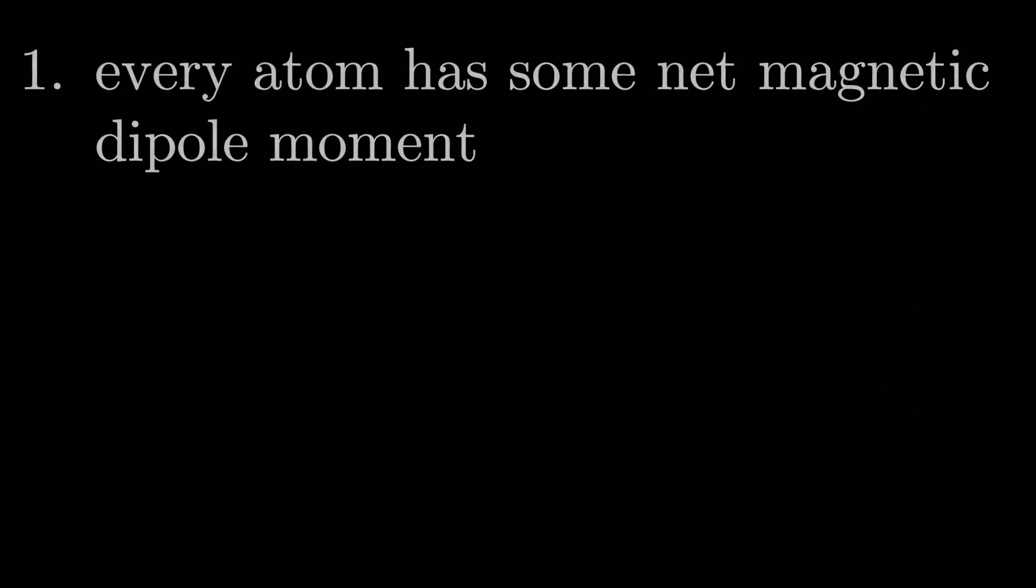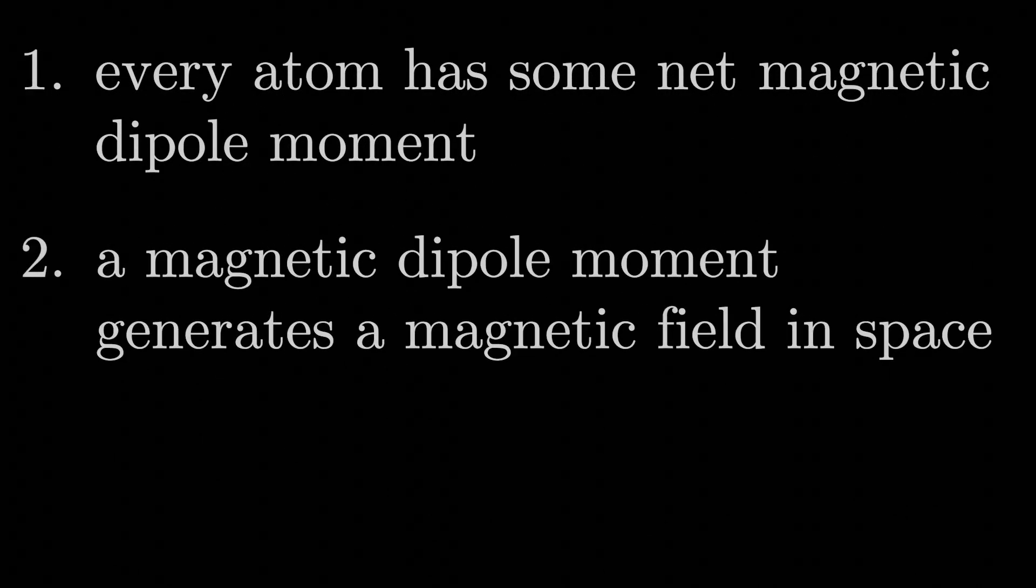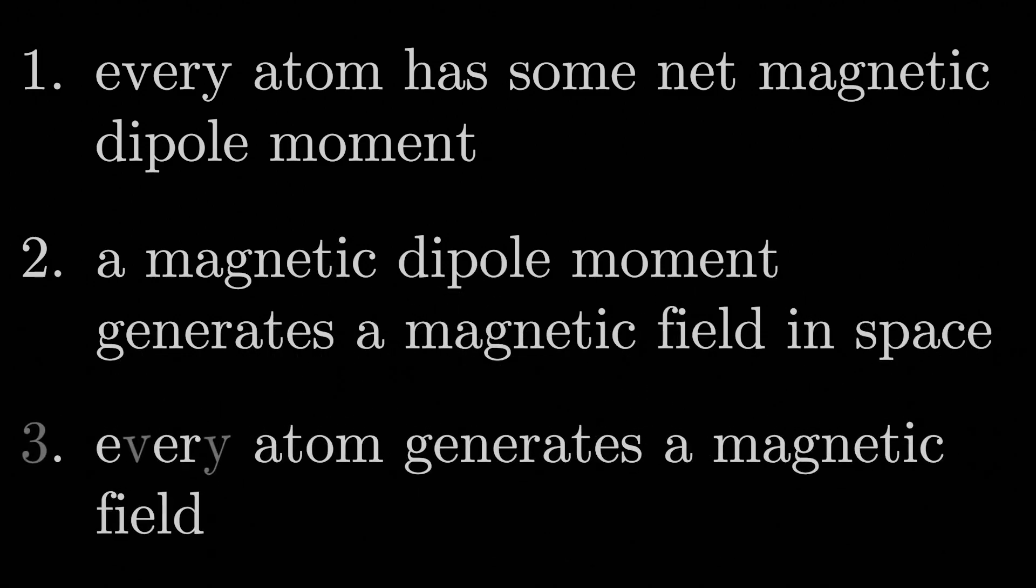The electron orbit here functions just like a current loop, in that it too is really just a magnetic dipole moment at the end of the day. And this brings us to a fact that's true whether we're dealing with quantum mechanics or not. Every atom has some net magnetic dipole moment. A magnetic dipole moment generates a magnetic field in space. Therefore, if you follow my logic, every atom generates a magnetic field in space.